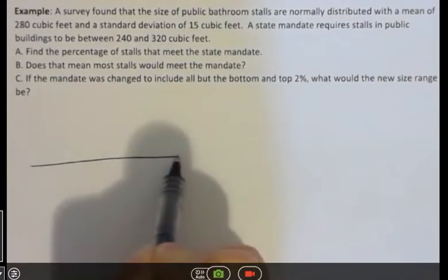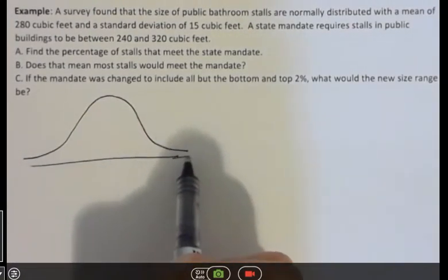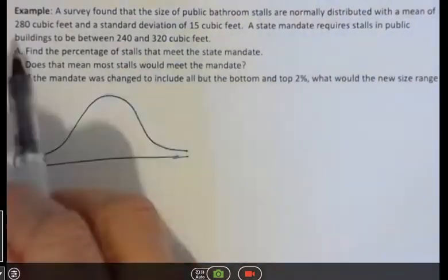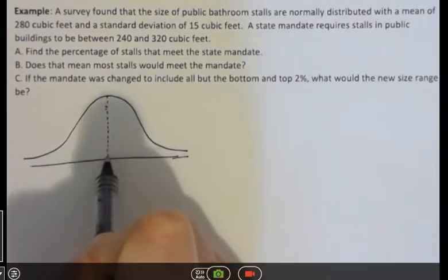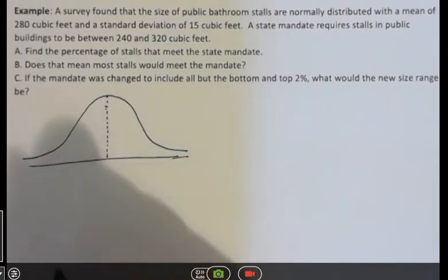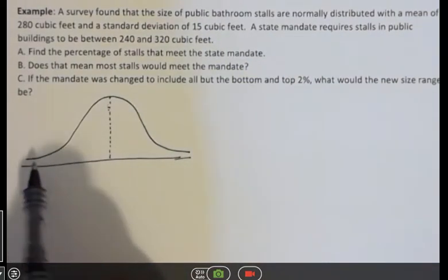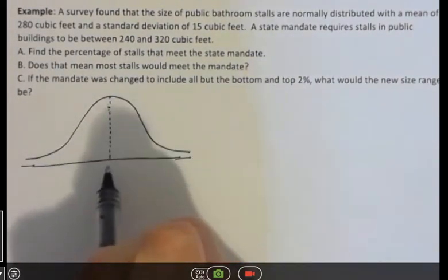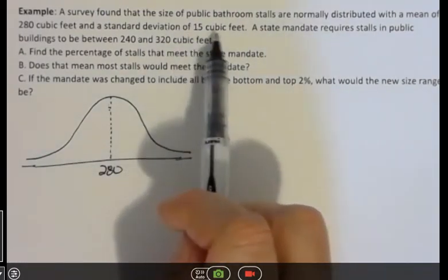So here's what we have. If it's normally distributed and the mean is 280 cubic feet, we could change these into standardized and we could get our mean to be zero and our standard deviation to be one. And our z-scores would have no units. But our mean is 280 and it has a standard deviation of 15.